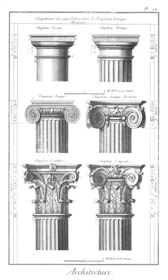Chandrashala: the circular or horseshoe arch that decorates many Indian cave temples and shrines. Chimera: as an architectural feature, means a fantastic, mythical or grotesque figure used for decorative purposes.